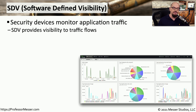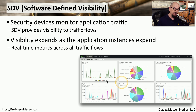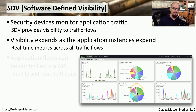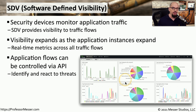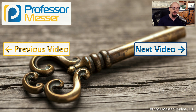Here's an example of some of the information we might be able to get from software-defined visibility. We would deploy our security devices, and those devices would be able to understand the application flows traversing the network. From there, we're able to get real-time views of web usage, host name usage, and the top applications in use based on what these devices are seeing on the network. And if we identify a potential threat on the network, we can use APIs to control what these application devices may be sending across the network.